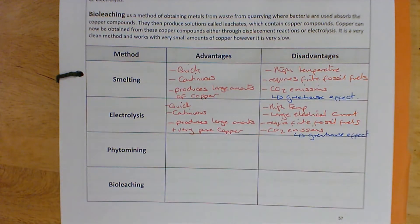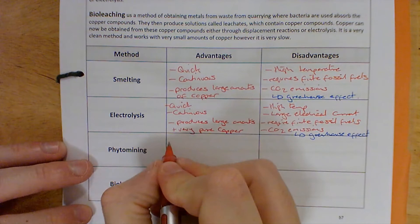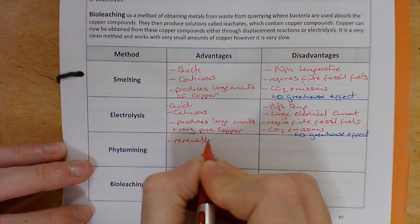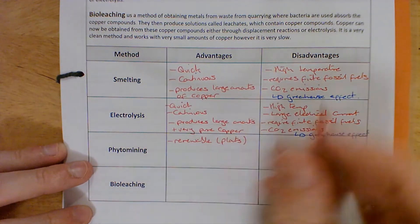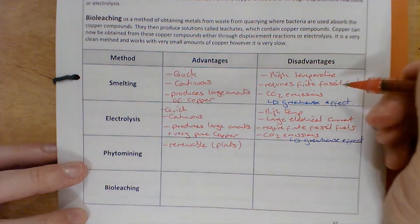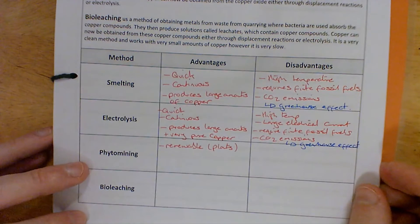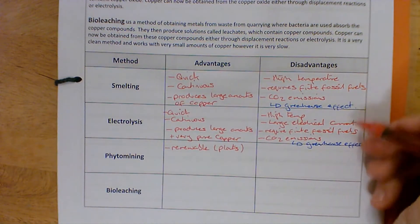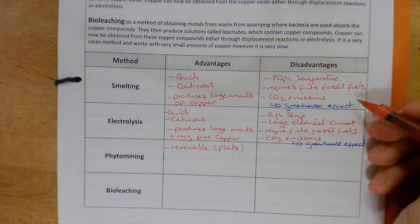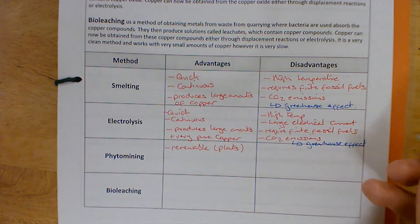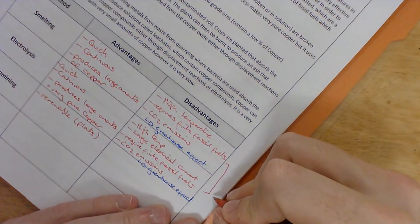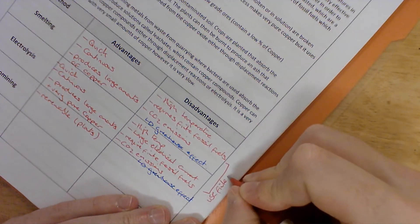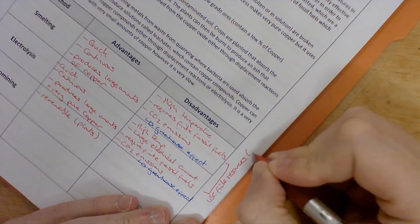Phytomining advantages: it's renewable because it uses plants. Going back — a massive disadvantage I haven't included for either smelting or electrolysis: both use metal ores, which are finite resources. For phytomining, however, it is renewable and it's essentially recycling the copper. Another advantage is it decontaminates soil. Disadvantages: it is very slow and produces only small quantities of copper.